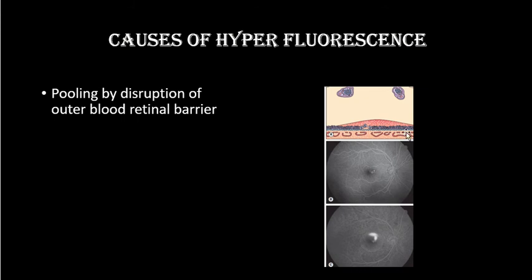In pooling, the fluorescence increases with the passage of time, but the area of fluorescence remains the same. For example, in pigment epithelium detachment, dye collects under the area of detachment — fluorescence increases in intensity but the area does not increase. By the end of the angiogram, pooling gradually increases in fluorescence but the area remains the same.